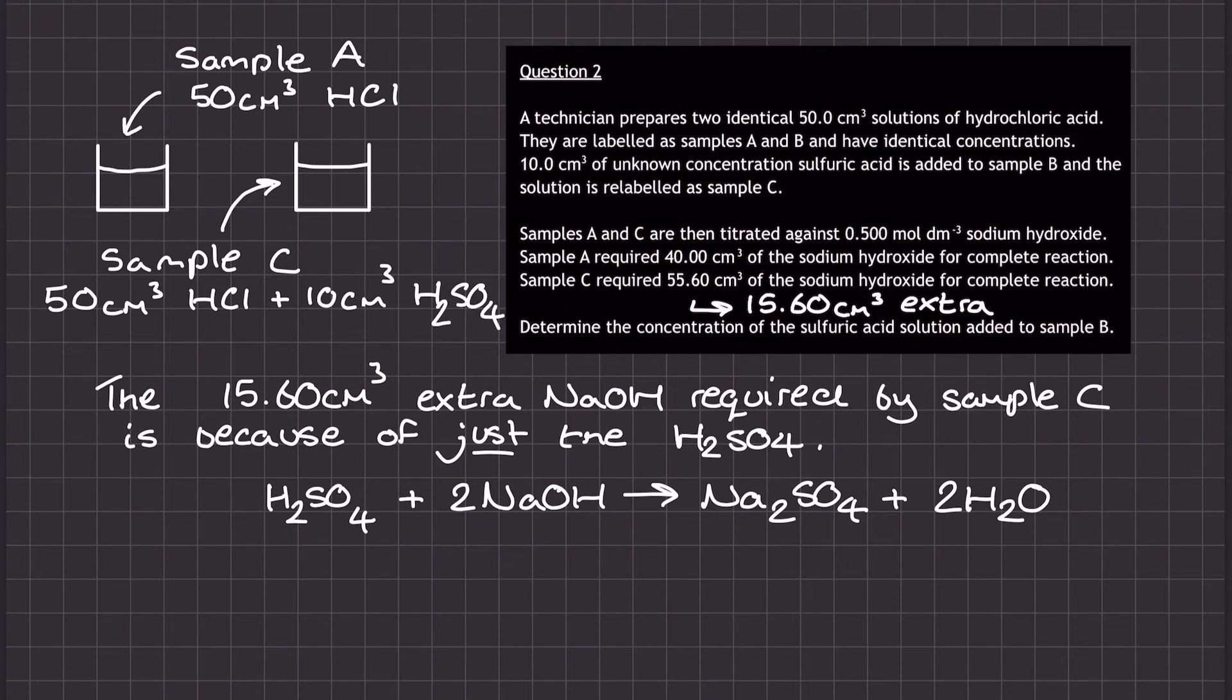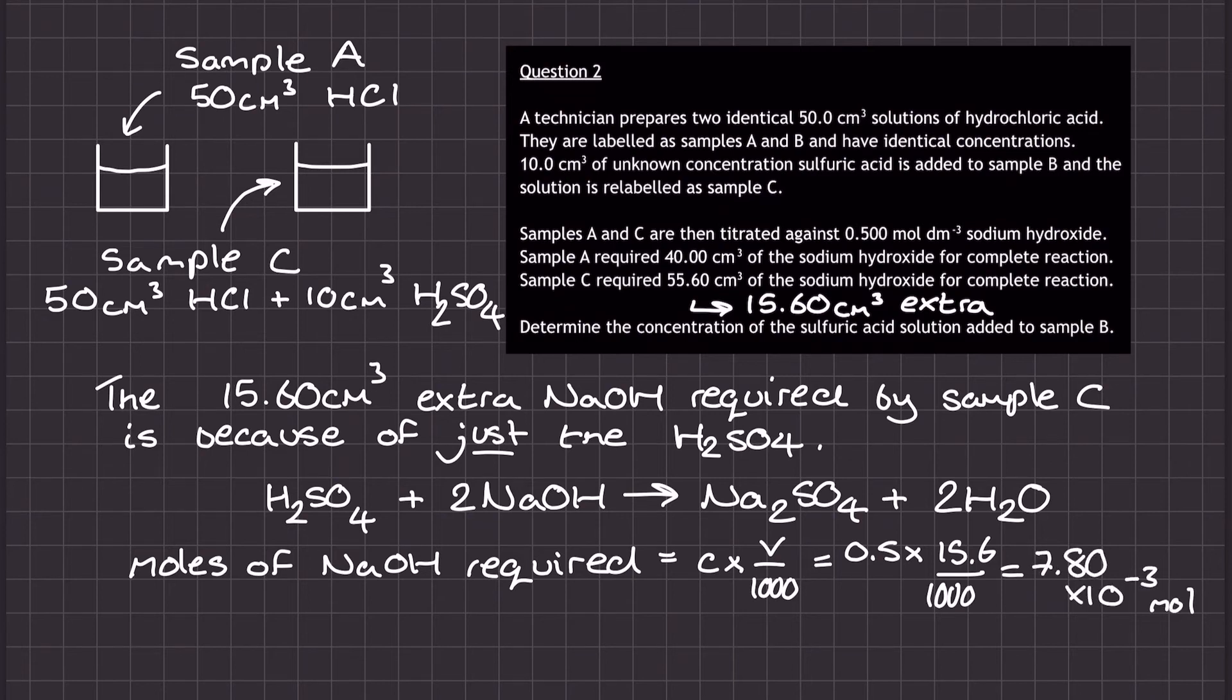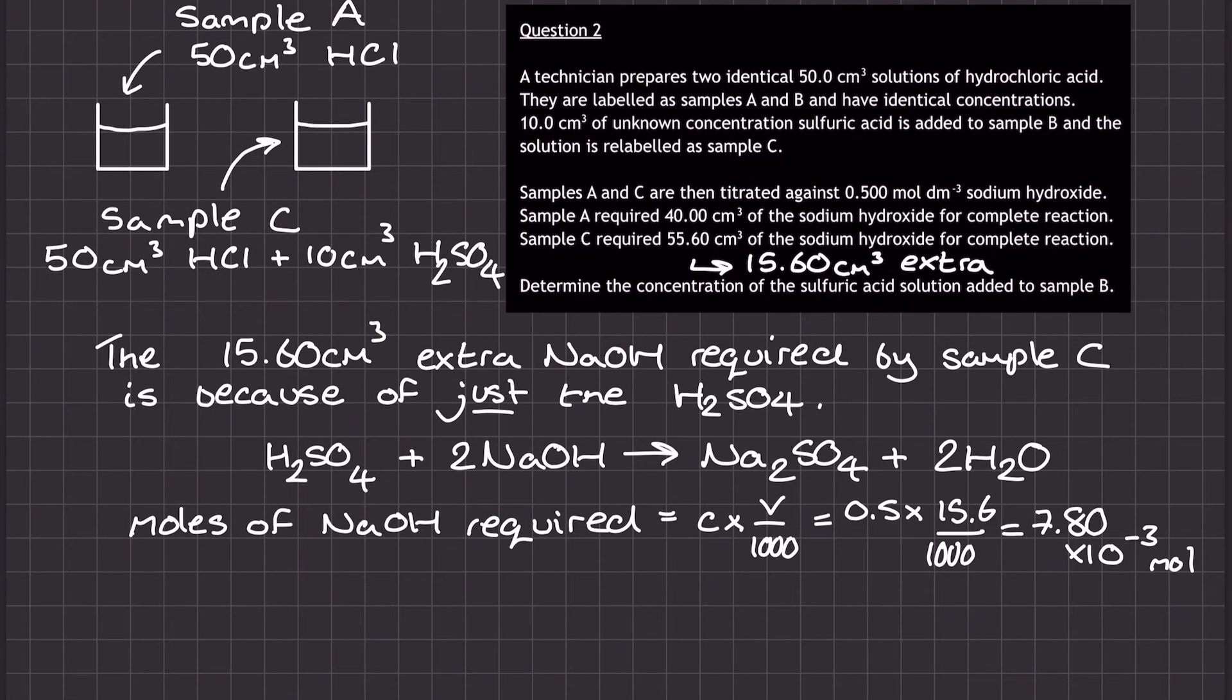The calculation then instantly becomes more recognizable. I've got the full reaction equation, which shows a 1 to 2 ratio between the sulfuric acid and the sodium hydroxide, and to calculate the number of moles of sodium hydroxide required, I do concentration times volume over 1,000. So that's 0.5 times 15.6 over 1,000, to give me a moles of sodium hydroxide required to neutralize just the sulfuric acid, equal to 7.80 times 10 to the power of negative 3 mole.